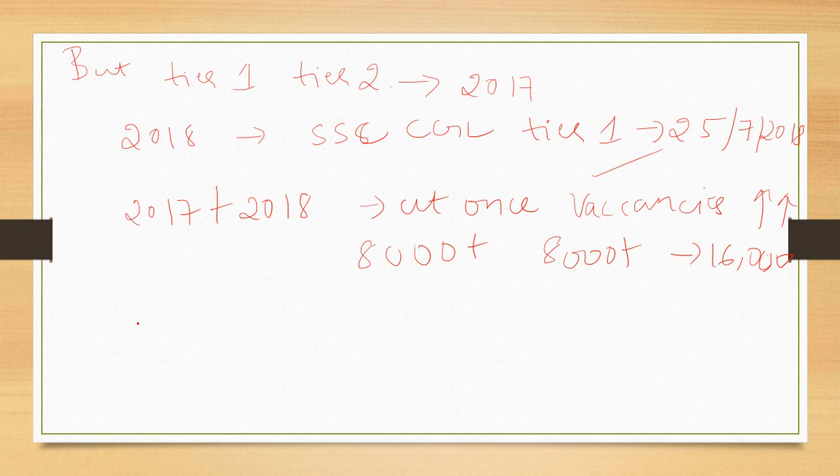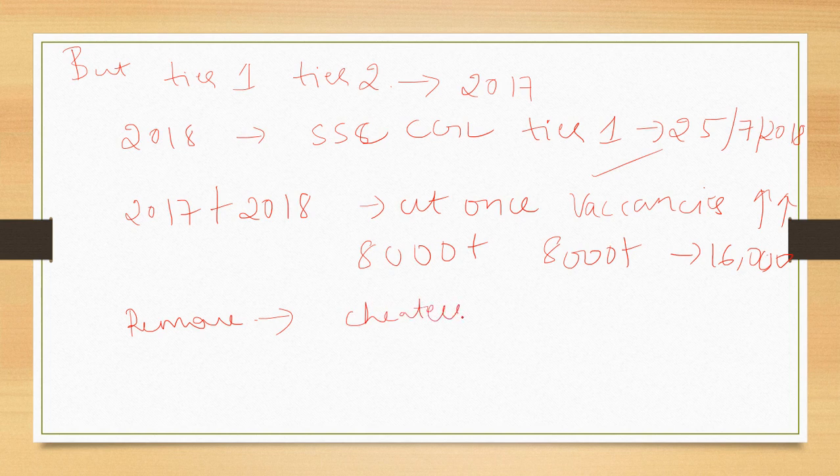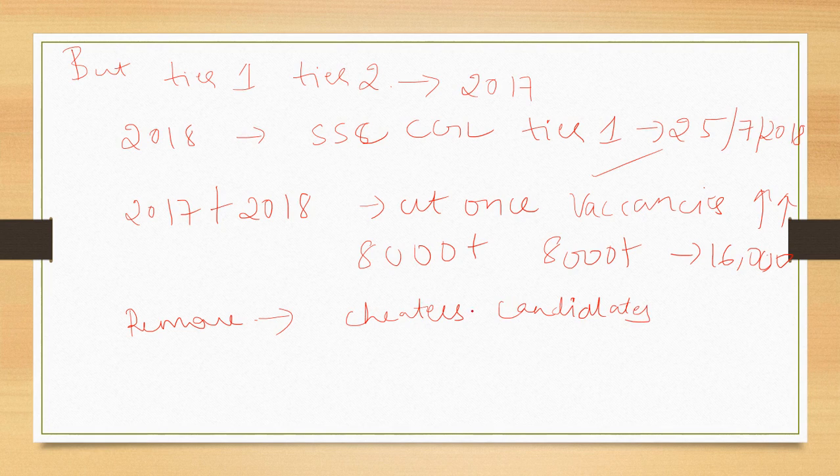Remove all those people who have cheated. The cheaters and as well as the candidates who have cheated should be given harsh punishment. There is no doubt about it and strict action should be taken on these people.